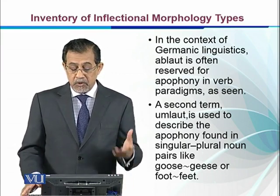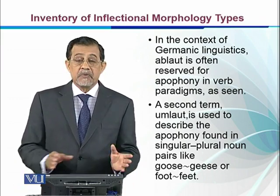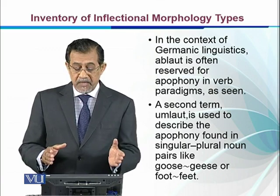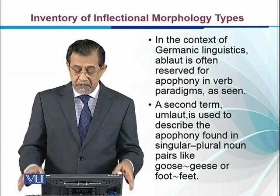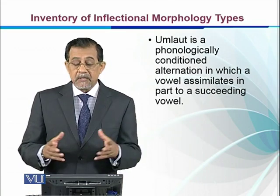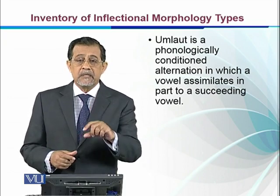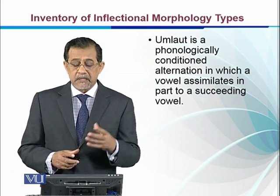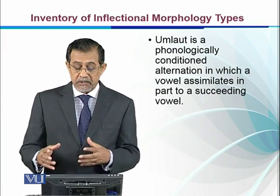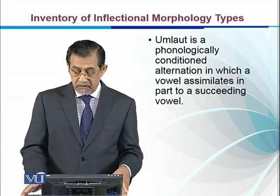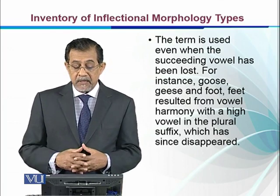A second term, umlaut, is used to describe the apophany found in singular-plural form pairs. For example, 'goose' becomes 'geese' in the plural, and 'foot' becomes 'feet.' Umlaut is a phonological conditioned alternation in which a vowel assimilates in part to a succeeding vowel — meaning there is an internal change in the sound of the word.